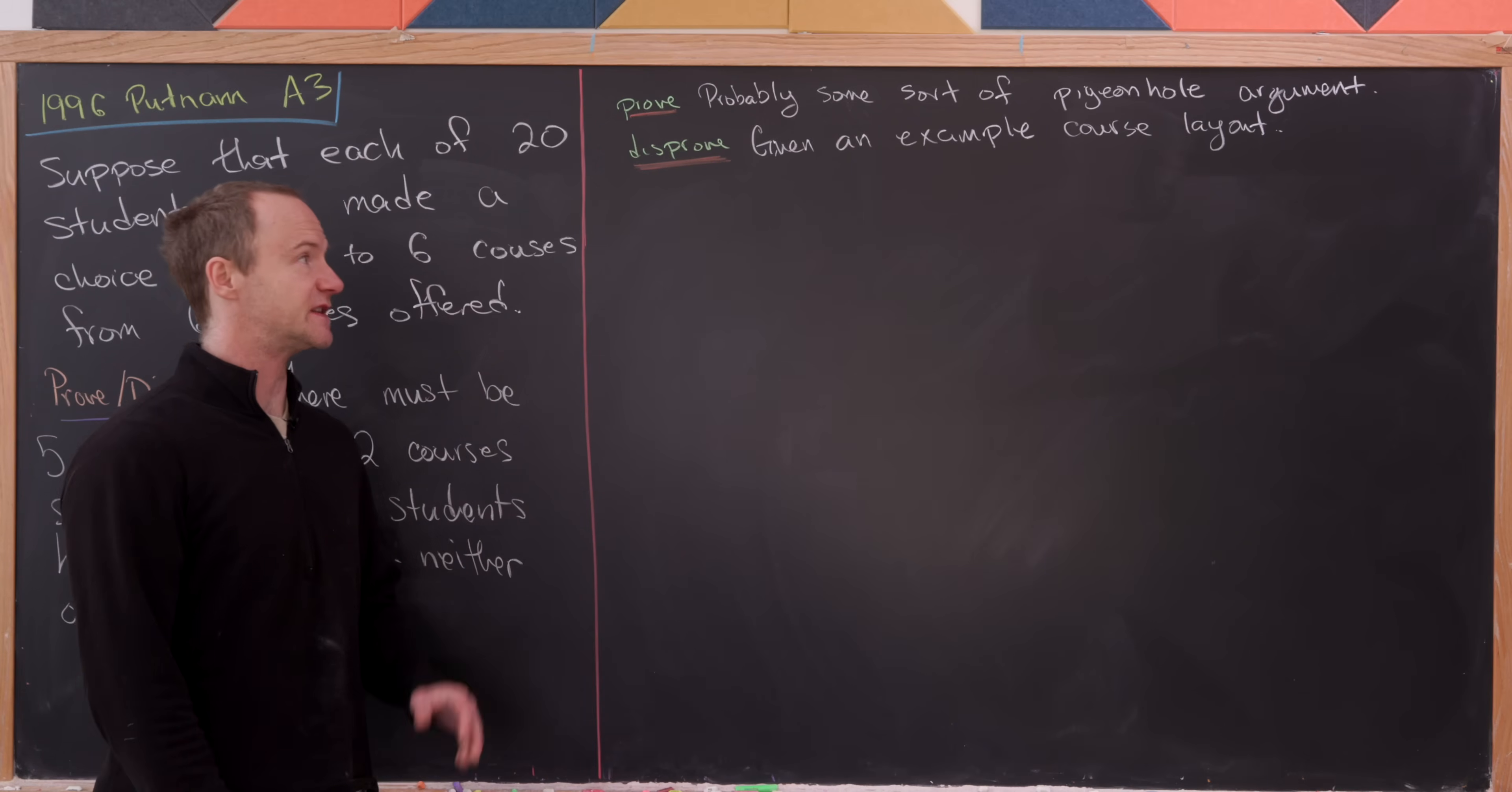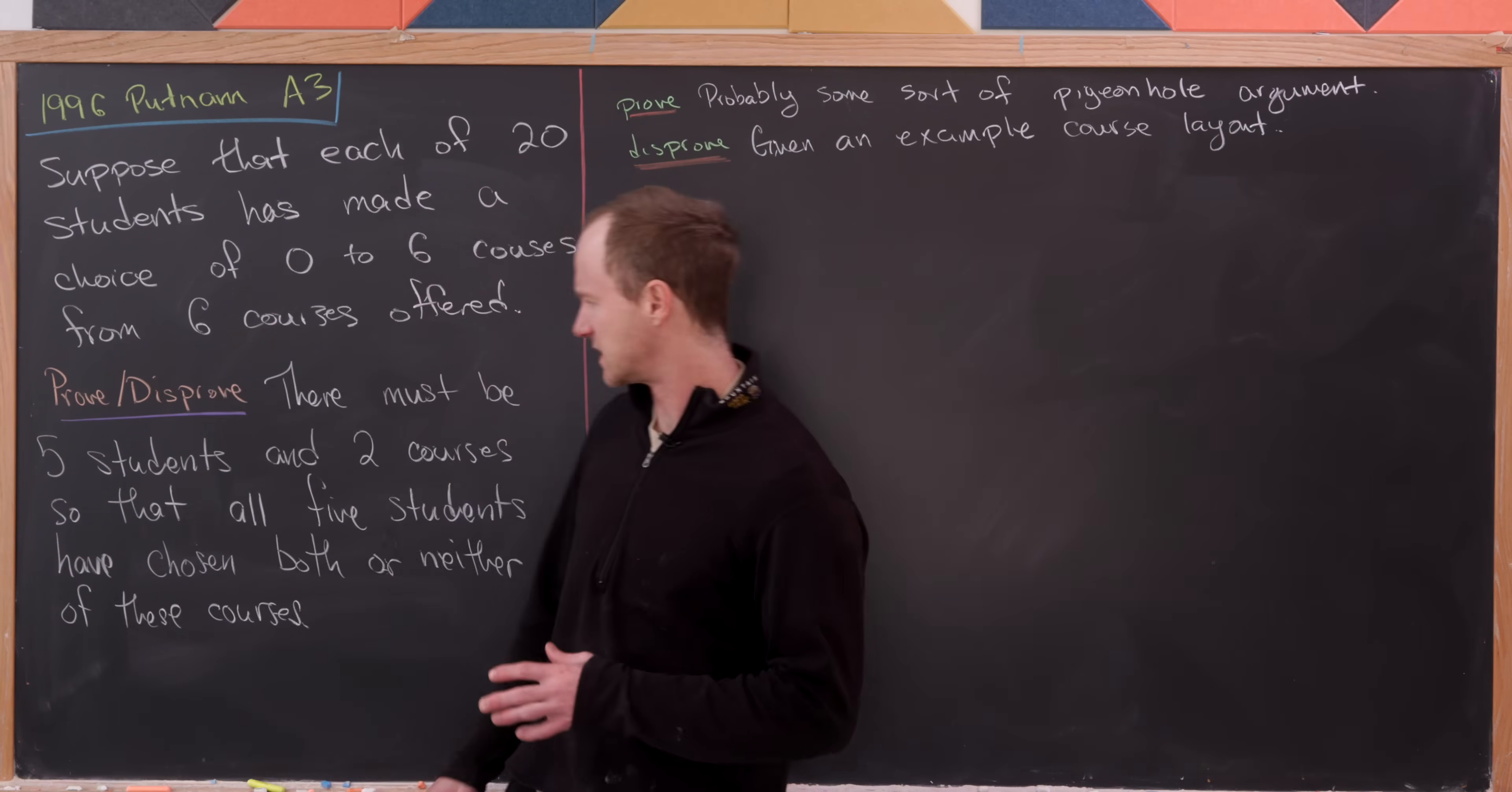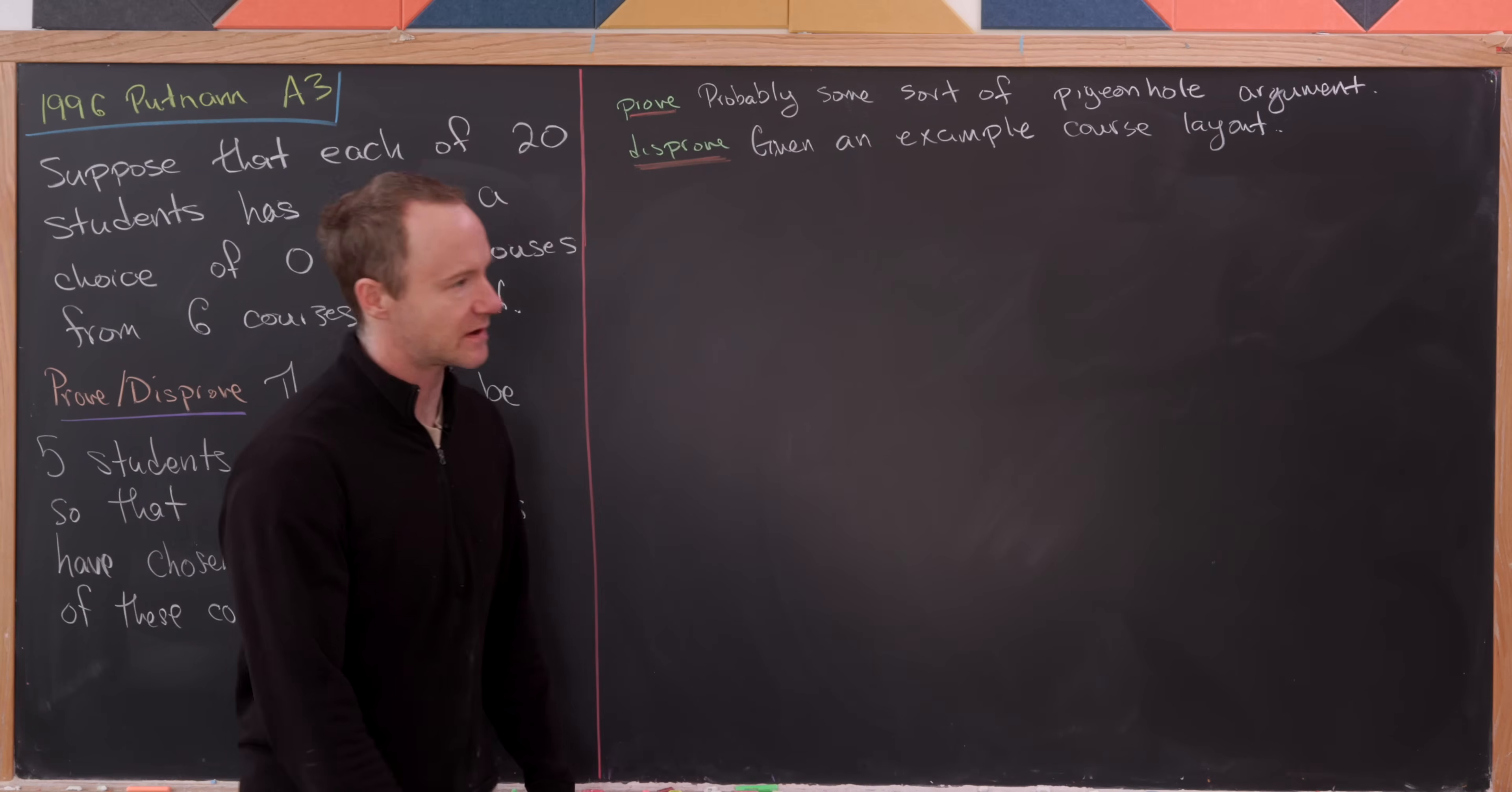And then to disprove this statement we would simply have to give an example of a course schedule for each of the students that exhibits the opposite of this property. So we would have two courses, and those two courses would never have five students taking them and also five students not taking both of them.